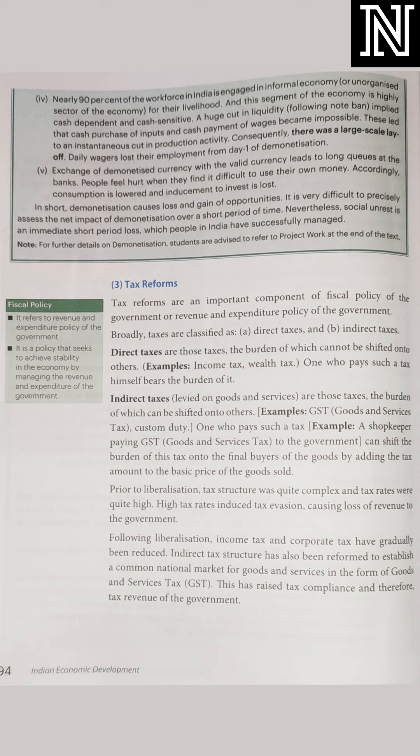तो अब क्या changes करी गई tax reform में? Prior to liberalization, tax structure was quite complex. तो liberalization चालू होने से पहले, tax structure जो था complex था. Tax rate बहुत high थे. तो जब tax rate बहुत ज़्यादा थे, तो लोग tax देते ही नहीं थे — tax evasion करते थे. Tax evasion का मतलब क्या है? Tax छुपा कर रखना — आप अपनी income कम बताओगे, तो आप tax pay नहीं करोगे. When high rate of tax is there, the public is not ready to pay the tax to the government. They are doing tax evasion, showing less income.